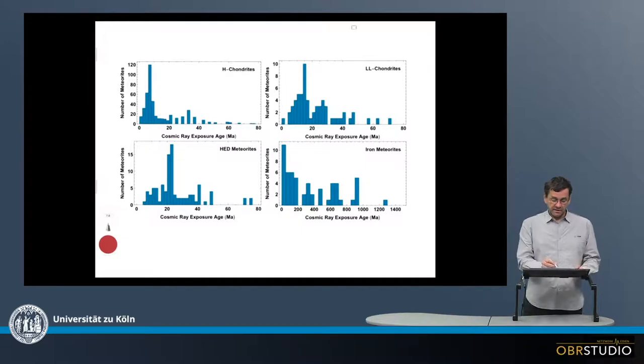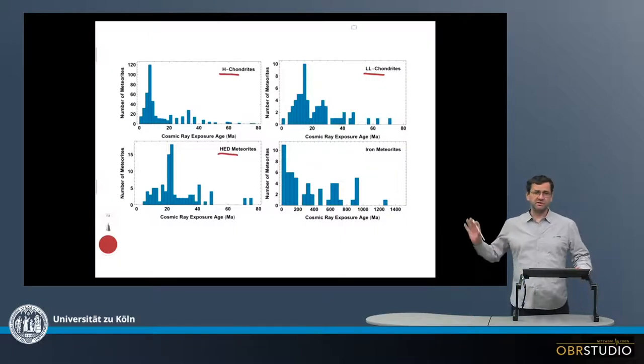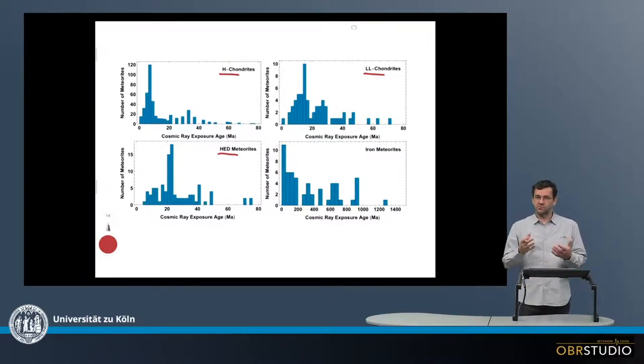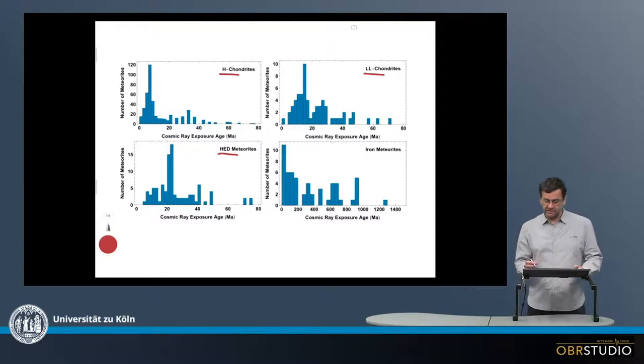There are four of them, and they show the H-chondrites, the LL-chondrites, and the HED meteorites. So these are all more or less rocky meteorites, or stone meteorites, and then there is another plot for the iron meteorites.